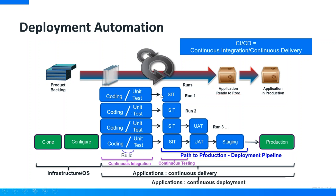Une fois que les versions d'application sont fabriquées, elles sont poussées dans les environnements de test. On parle de Continuous Testing : le but final étant d'accélérer le Time to Market, un des points clés est d'automatiser les tests. Micro Focus a également des solutions pour faire tout ce qui est Continuous Testing. Le Continuous Delivery, c'est la capacité de déployer n'importe quelle application, à n'importe quel moment, sur n'importe quel environnement.